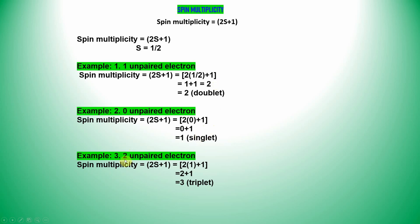The third example: 2 unpaired electrons. Substituting into the formula 2S plus 1, with 2 unpaired electrons S equals 1. So 2 times 1 equals 2, then 2 plus 1 equals 3. You will get the triplet. You need to write your Gaussian calculation in the triplet state.